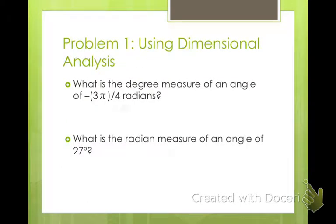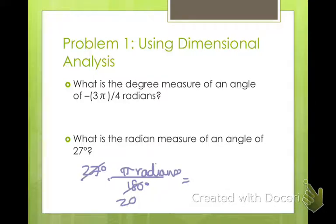What's the radian measure of an angle of 27 degrees? We take 27 degrees and multiply by π radians over 180 degrees. We want degrees on the bottom. The 27 and the 180 reduce—this is 20 and this is 3. So you get 3π over 20. That's your radian measure. It's close to 30 degrees, a little bit less than.